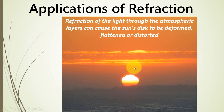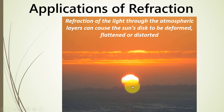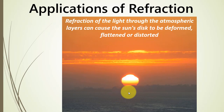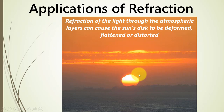Sometimes when the sun is setting we see a very distorted, flattened, or deformed image of it. This is because when the sun is near the horizon, its light travels through more of our atmosphere, causing more refraction. Since the atmosphere is not uniform and varies continuously, this variation causes the image to deform or distort. When there is a lot of pollution in the air, we see an especially distorted image of the sun.